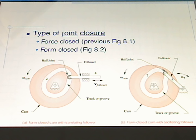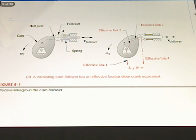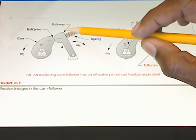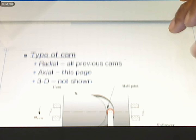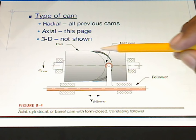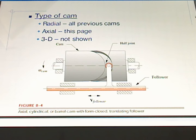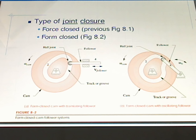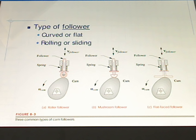We can also classify cams by the type of joint closure. The previous examples were force closed — the follower maintains contact with the cam surface via a spring that keeps pressure on the back of the follower. We also have form closed cams. In a form closed cam, the wheel on the follower stays within the cam because of the geometry. When geometry is the factor keeping things together, we have a form closed cam. The follower moves back and forth within a groove based on the shape of that groove.